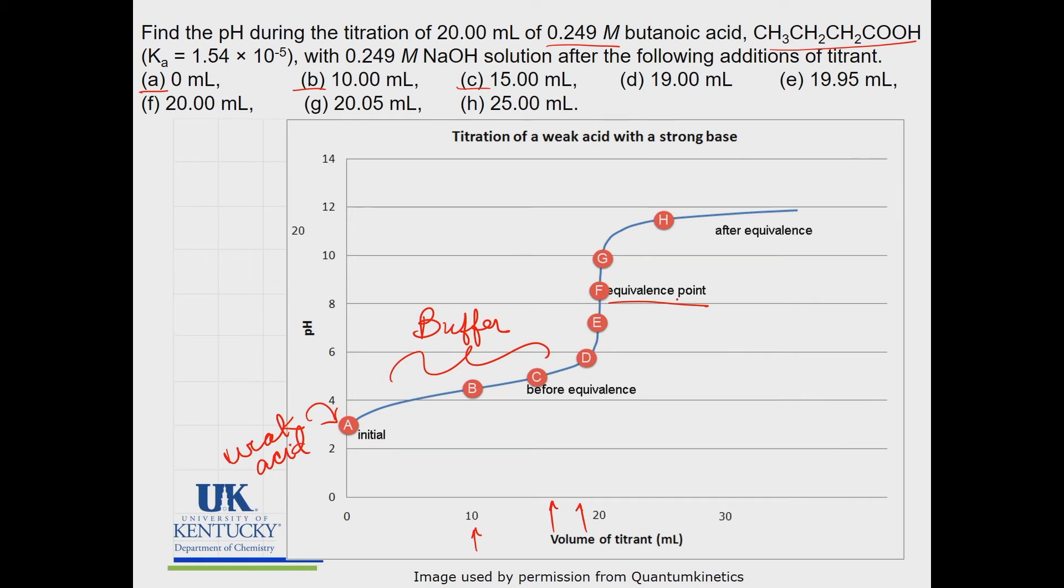As we get close to the equivalence point, which I've established that this is the equivalence point, it starts to rise rapidly. But then when we get right here where we have equal mole amounts of both acid and base, we're at the equivalence point.